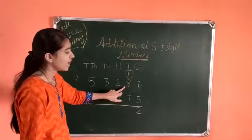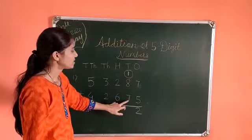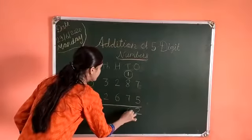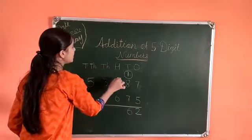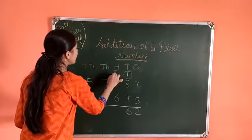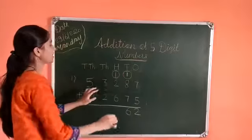1 plus 8 is 9. 9 plus 7 is 16. Again, 1 carry forward to 100th place. And make a circle.